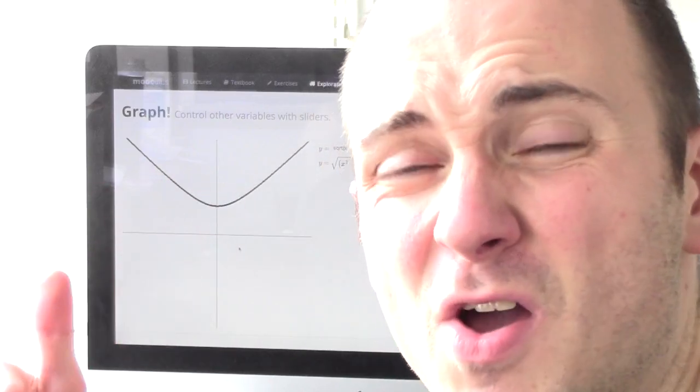If we zoomed in close enough, the thing doesn't look like it has a sharp corner anymore. It actually looks like it's curved. And if we zoomed in even further, the thing would look more and more like a straight line. What we're really seeing is that the function is differentiable.